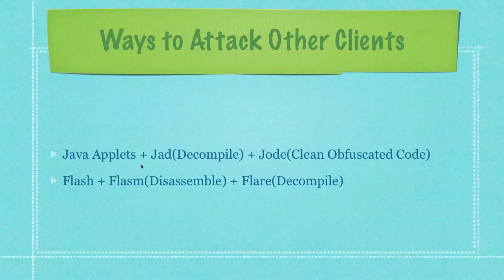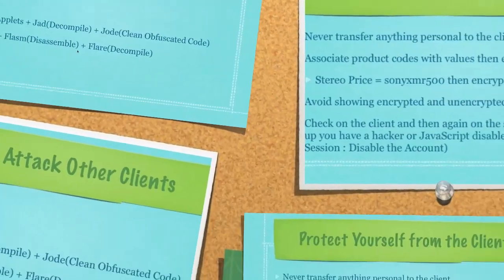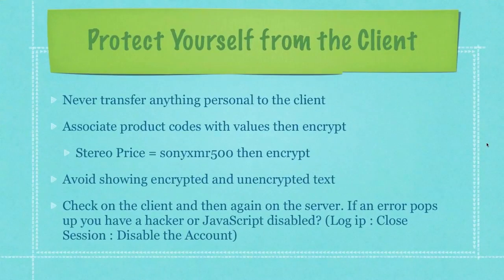If you're using Java applets or Flash, it's just as easy to do the same thing. A Java applet can be run through a program called JAD which decompiles it, and then another program called JODE which cleans any obfuscated code. Many people run their Java or Flash programs through an obfuscator to jumble the code, but programs like JODE will clean that up. Flash also has programs that do very similar things.